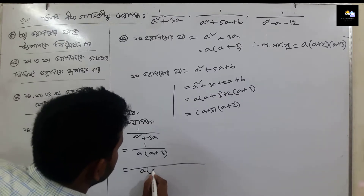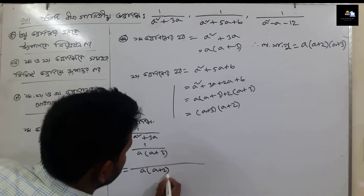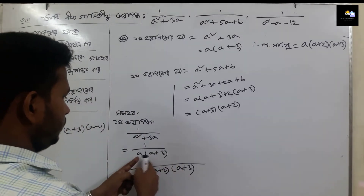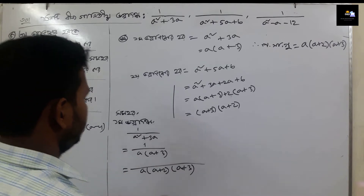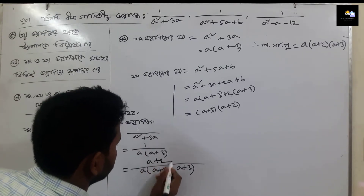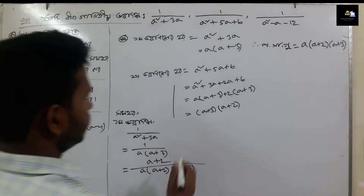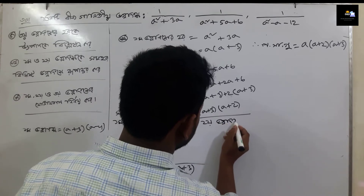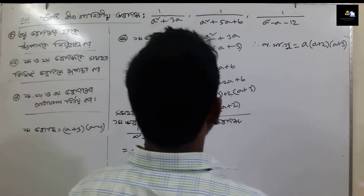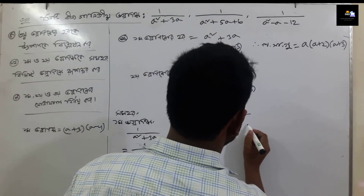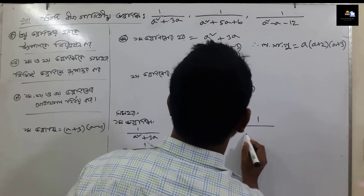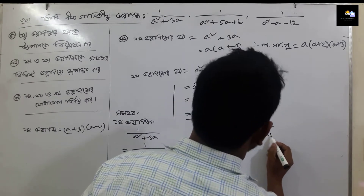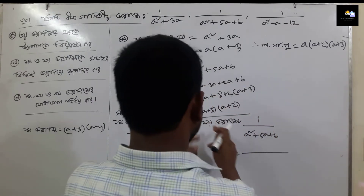So we have to add a plus 2 into a plus 3. Now let's see that we have a into a plus 3, so we have a plus 2. So we have a plus 3, a plus 2.